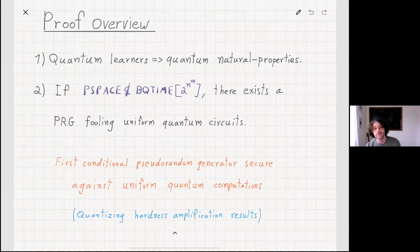The way that we do it is by quantizing several hardness amplification results, primarily the list-decoding algorithm of IJKW. Of course, you might say, we want to prove unconditional lower bounds. So how is it that we have a conditional PRG? How do we get that if we have only a conditional PRG?